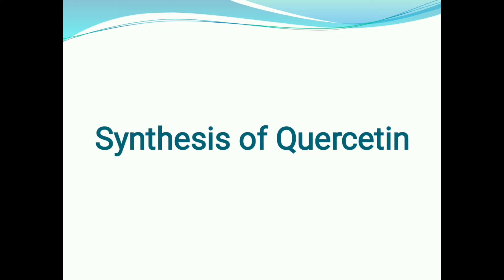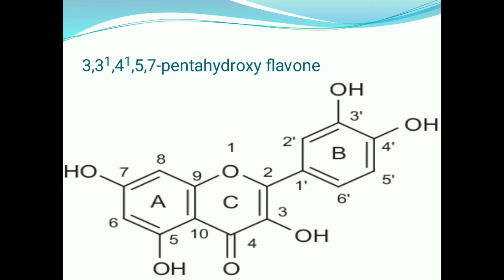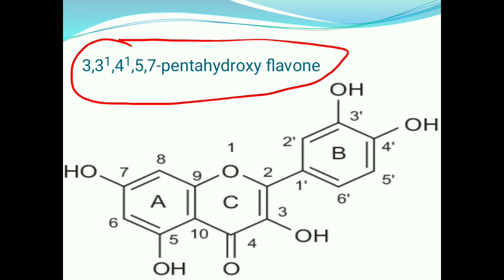We know the structure of quercetin. Quercetin is also called as 3,3',4',5,7-pentahydroxyflavone. In this structure, a C double bond O (ketonic) group is present. Because of this C=O group, quercetin belongs to the flavone class.